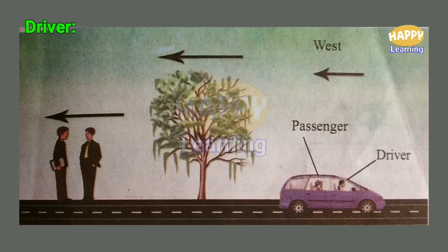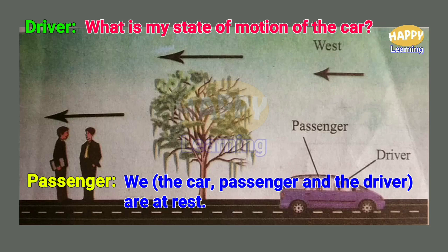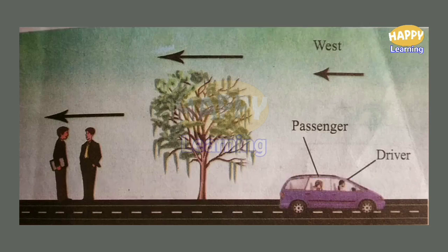Then the driver asks: what is the state of motion of the car? This is a difficult question. The passenger answers that we are at rest — the car, the driver, and the passenger himself are all at rest. The road, the trees, and the persons on the footpath are all moving in the backward direction — that is, in the west direction. So for the persons inside the car, they appear to be at rest, while all objects outside the car are moving in the opposite direction.